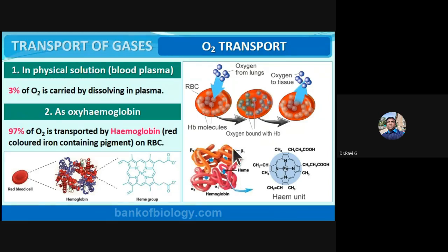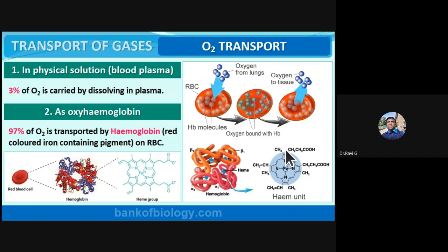Hemoglobin's structure was discussed previously in the context of protein quaternary structure — two alpha and two beta subunits. It is the red-colored iron-containing pigment within the RBC. Each hemoglobin molecule contains iron, giving it the ability to bind oxygen. 97% of oxygen is transported by hemoglobin.